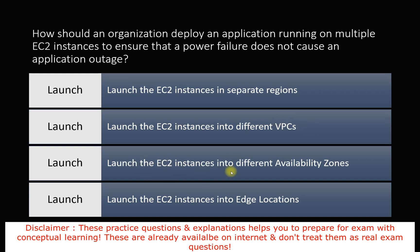We won't go with edge locations because you cannot deploy EC2 instances into edge locations in AWS. The correct answer is to launch EC2 instances into different availability zones. Separate regions add latency and are for disaster recovery; different VPCs may still land in the same AZ; edge locations don't support EC2. So the answer is different availability zones.